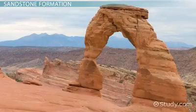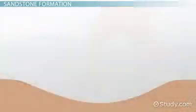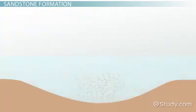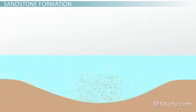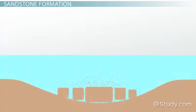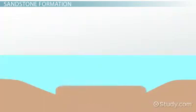After a source rock is weathered and eroded, the resulting sand grains might fill a bowl-shaped basin on land or underwater. With the pressure from more sediments landing above and the movement of water through the grains, the sand becomes sandstone. Finer grains of rock and new mineral growth fill the spaces between the grains, cementing the new rock.